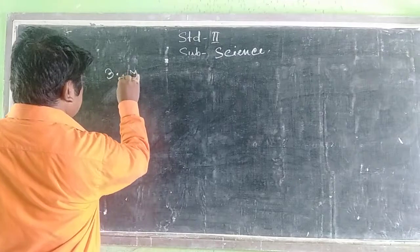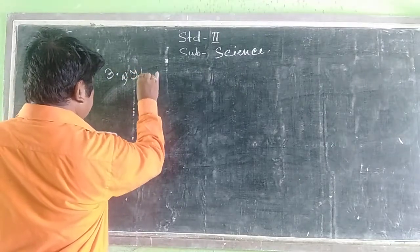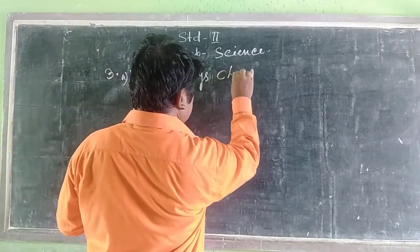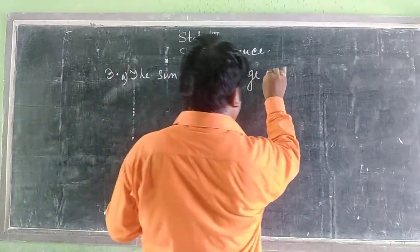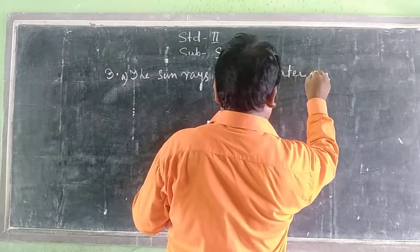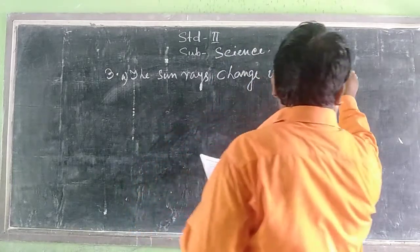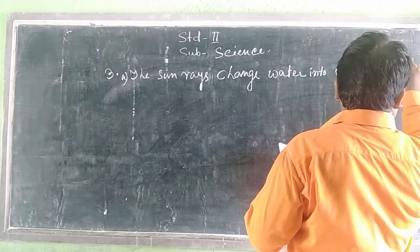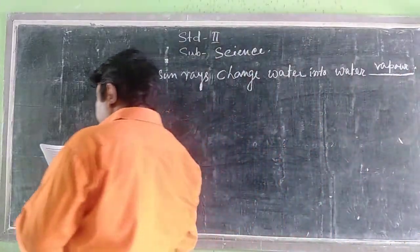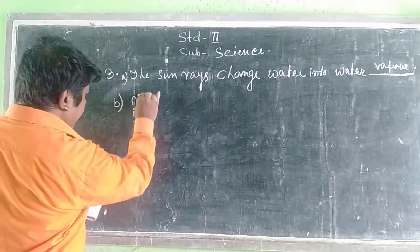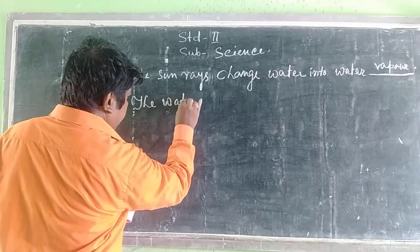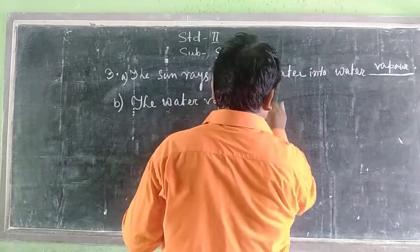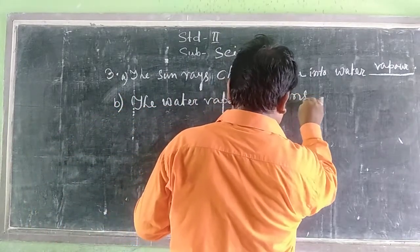Number one: The sun ray change water into water vapour. The water vapour forms a cloud.